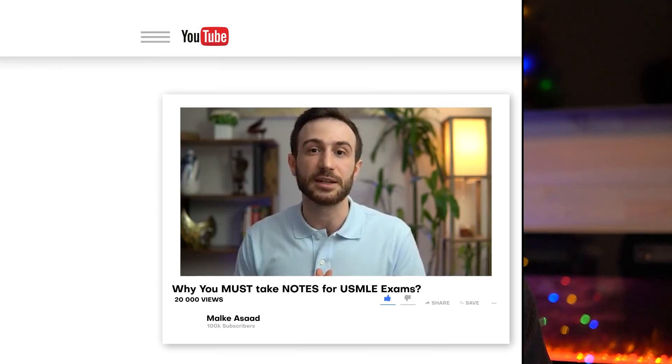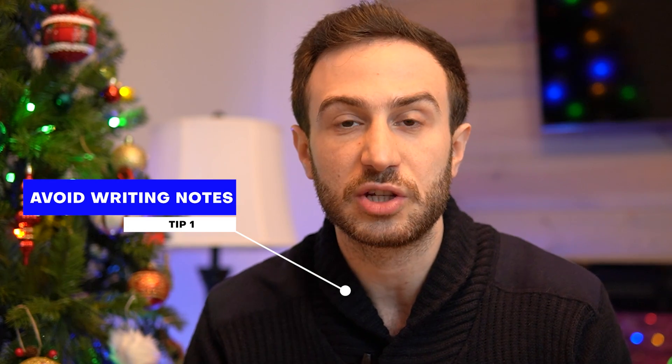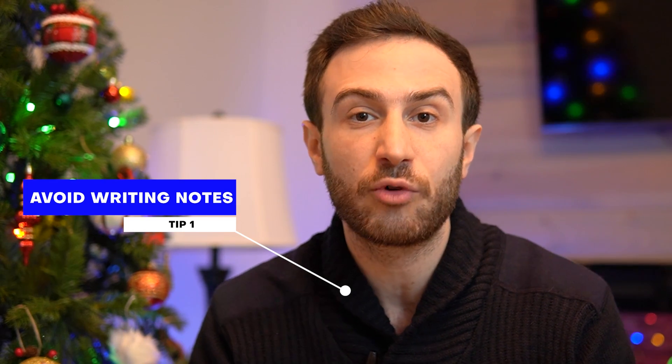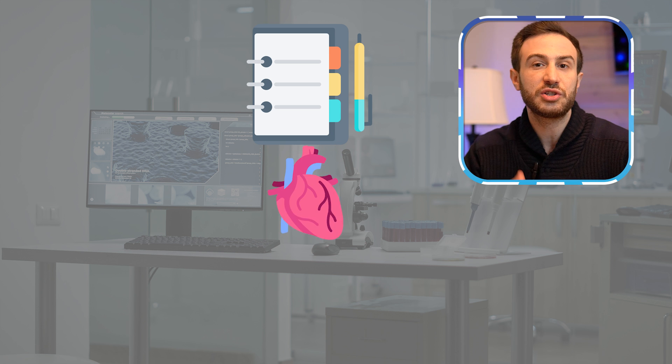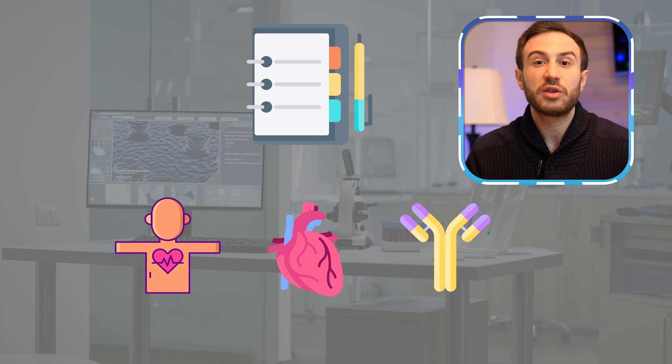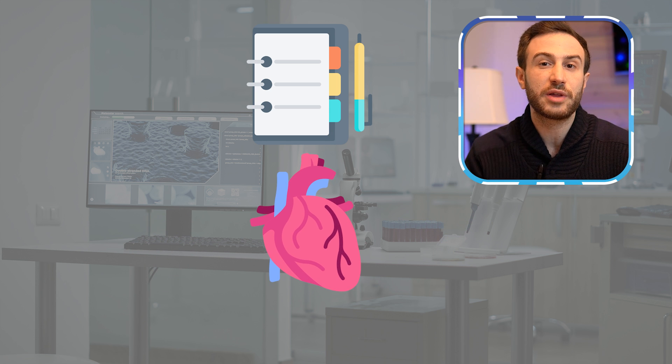There are multiple ways to take notes and create a review format, and I have a detailed video on note-taking for Step 1 and Step 2 CK. The first approach is to avoid writing down notes by hand since it's time-consuming and inefficient. U-World now has a built-in notebook where you can copy and paste text, images, and tables. That notebook can be divided into subjects like cardiology, physiology, and immunology, so information is organized by system and you can go directly to a section when reviewing.